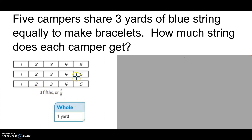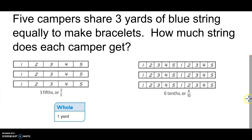Our one whole is a yard of blue string. Solving it in a different way, this time I divided the three yards into ten equal parts — so those are tenths. Each camper will get six tenths. Camper 1 gets one tenth, two tenths, three tenths, four tenths, five tenths, six tenths. And the same for each camper: six tenths. Here is six tenths written as a fraction.